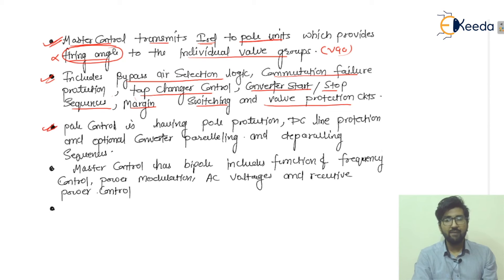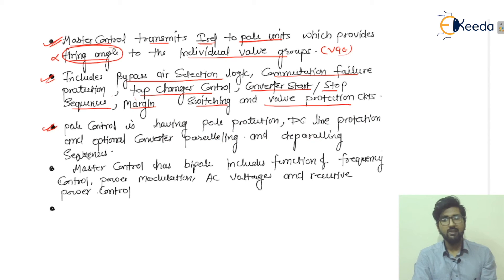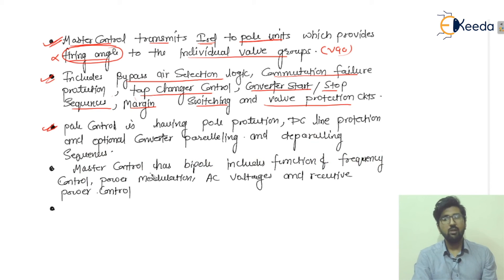The pole control includes pole protection, DC line protection, and optimal converter paralleling and deparalleling sequences. The master control at the bipole level includes functions such as frequency control, power modulation, AC voltage control, and reactive power control.